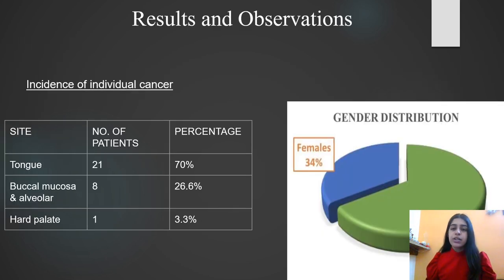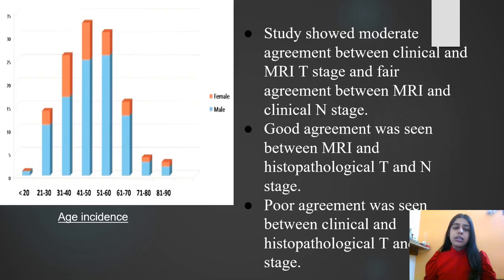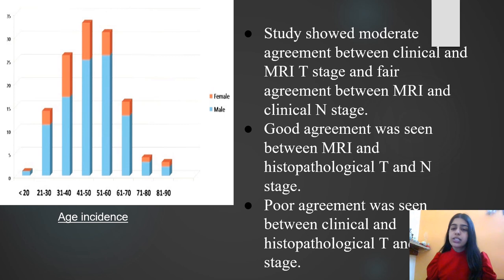The results showed that cancer was predominantly found in males, while the tongue was the most common site of involvement, followed by buccal mucosa, alveolar, and hard palate. Most patients were between 30 to 60 years of age. The study showed a moderate agreement between clinical and MRI T-staging, a fair agreement between MRI and clinical N-staging, a good agreement between MRI and histopathological T and N staging, and a poor agreement between clinical and histopathological T as well as N staging.